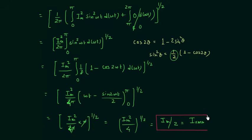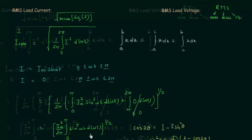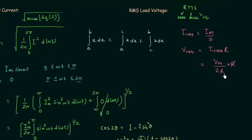After this I will find out the expression for the RMS value of load voltage. Rather than performing the integration again, since we have already calculated I_RMS equal to I_M over 2, we use V_RMS equals I_RMS multiplied by the load resistance R. Substituting I_RMS as V_M divided by 2R, and multiplying by R, the R terms cancel, giving V_RMS equal to V_M divided by 2. This is another important formula derived in this lecture.